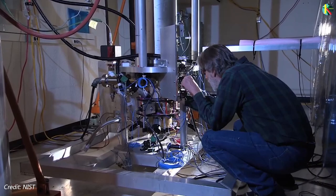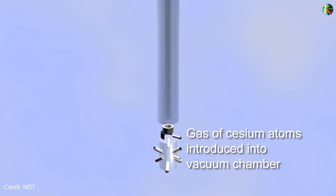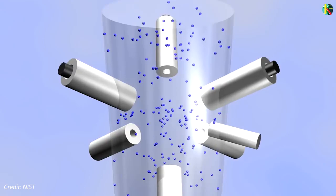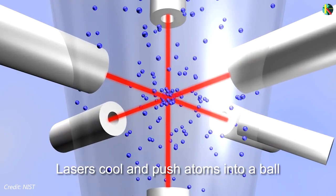First, a gas of cesium atoms is introduced into the clock's vacuum chamber. Then six infrared laser beams are directed at right angles to each other at the center of the chamber. The lasers gently push the cesium atoms together into a ball and in the process of creating this ball, the lasers slow down the movement of the atoms and cool them to near absolute zero.